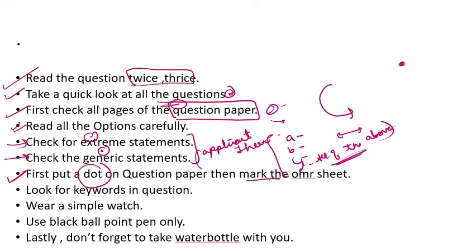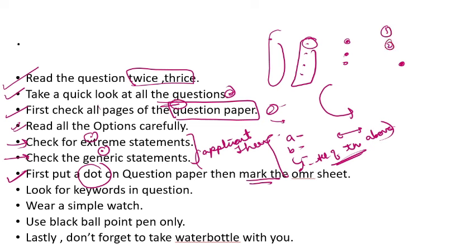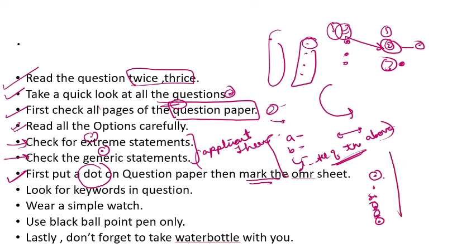First, put a dot on the question paper, then mark the OMR sheet. The OMR sheet is risky — if you have marked wrong, it is very difficult to correct it. So what you should do is: for every 5–6 questions, put a little dot on the question paper for your answers first. After that, carefully fill the OMR sheet. Go through serial numbers 1, 2, 3 and fill accordingly — question number 1's answer is in the second number, etc. Fill the OMR sheet slowly and with full attention.